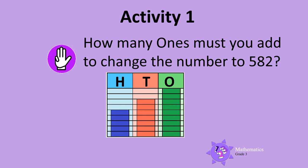This time, how many ones must you add to change the number to 582? Remember, we know that the number shown on this place value diagram is 579. We want to get 582. How many ones must we add? Did you say 3 ones? That is correct! Well done!